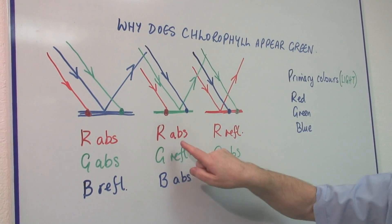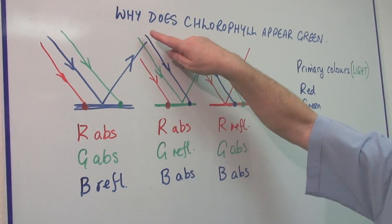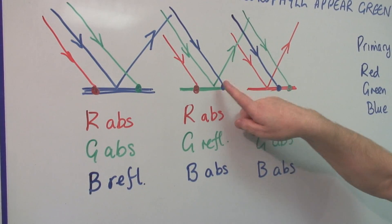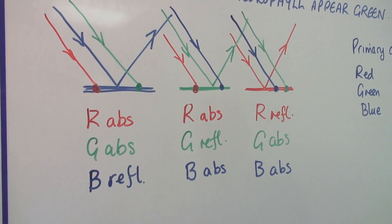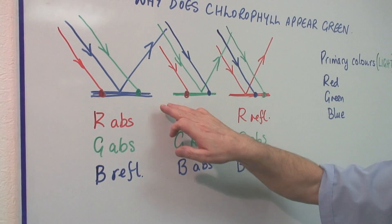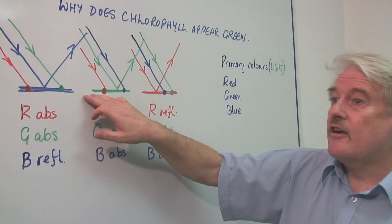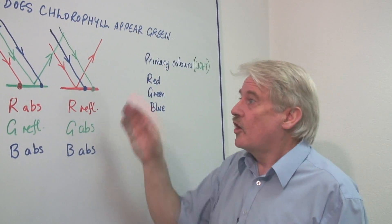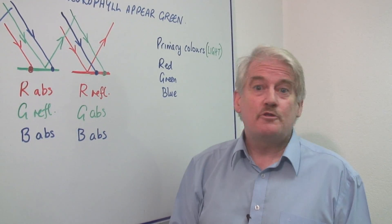The red light is absorbed, the blue light also is absorbed, but the green light is reflected. This is our green surface, this is our leaf, this is our chlorophyll in the leaf. And this is why chlorophyll appears to be green.